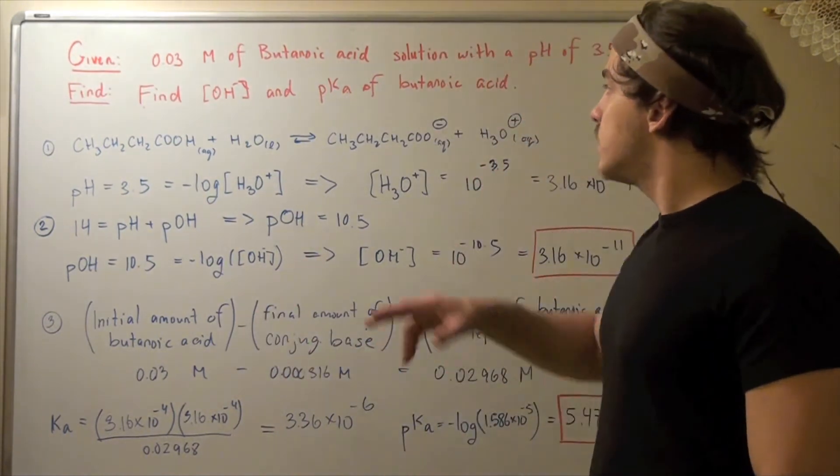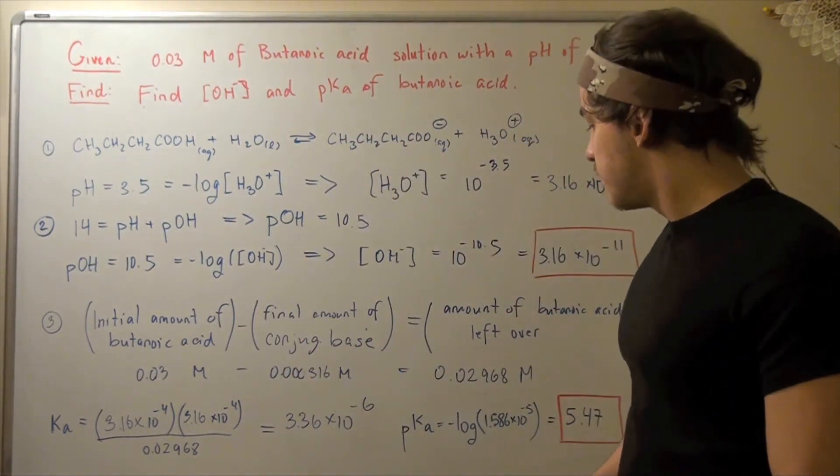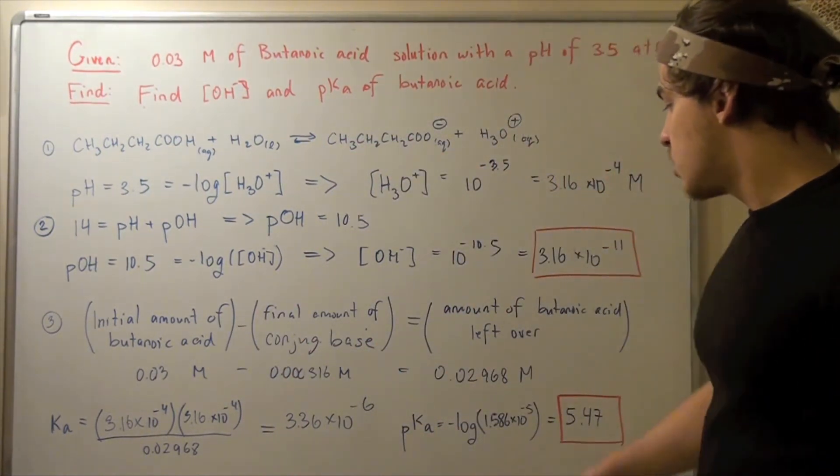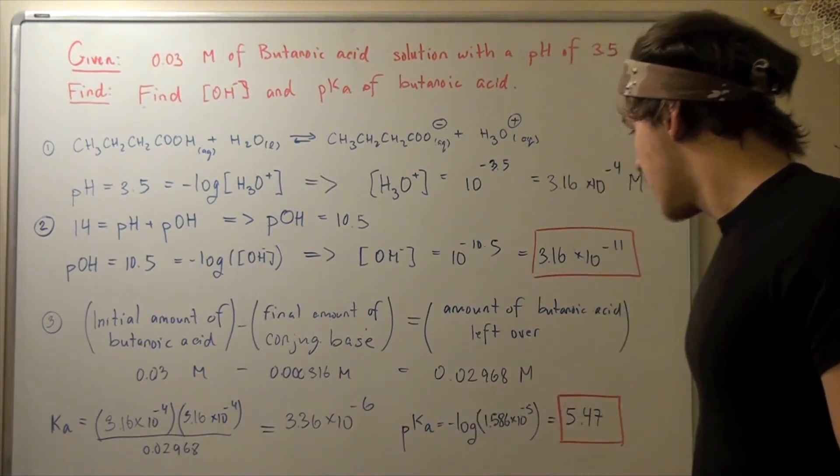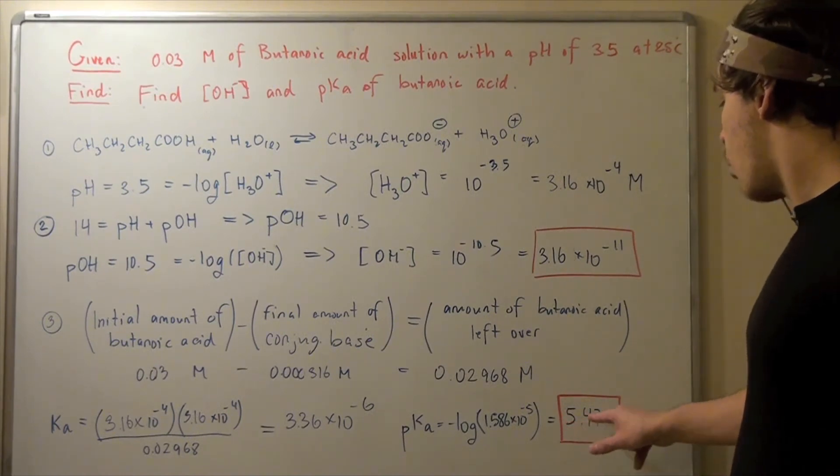But we're not done because we want to find the pKa. So I simply use the log formula. pKa equals negative log of Ka, which gives us 5.47.